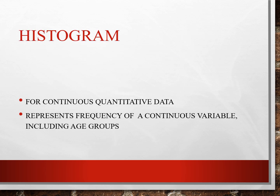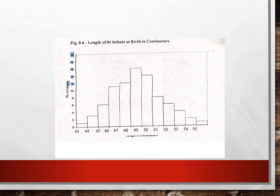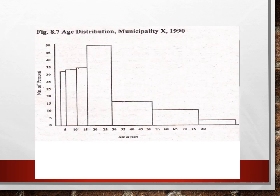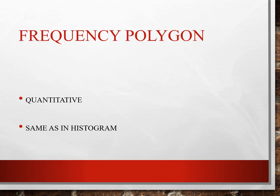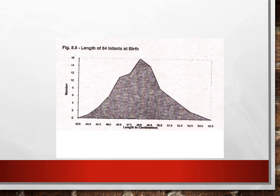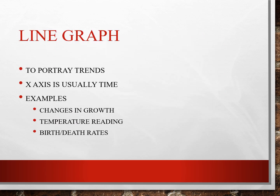Histogram: for continuous quantitative data, it represents the frequency of a continuous variable including age groups. Frequency polygon is quantitative, same as a histogram. Line graph: used to portray trends, with x-axis over time. Examples include changes in growth, temperature readings, and birth and death rates.